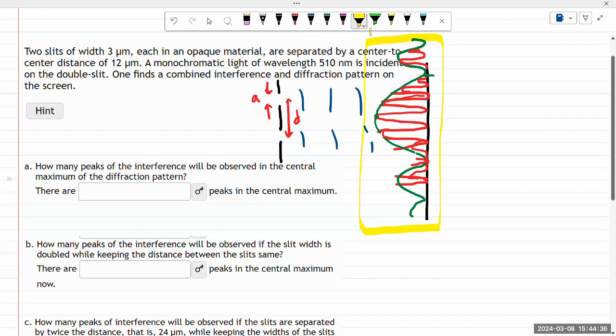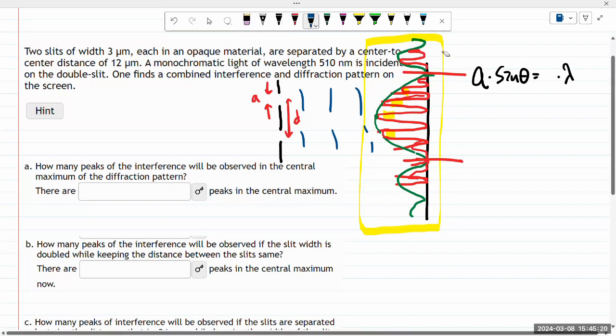It asks how many peaks of interference will be observed in the central maximum of the diffraction pattern. The way to do that counting is to think through - I'm going to have a diffraction minimum somewhere over here. The position of that diffraction minimum will be given by this expression derived in the textbook: aperture times sine theta equals some whole number times lambda. For the first order diffraction minimum, n equals one, so one times lambda.